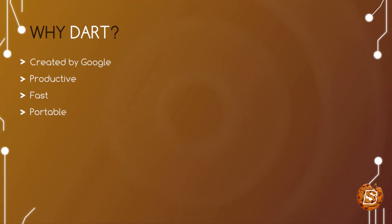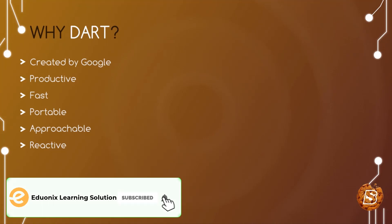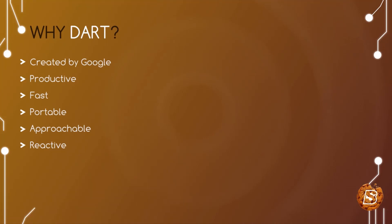Dart is also portable as it compiles to ARM and x86 code bases, and that's the reason why Dart mobile applications can run natively on Android, iOS, and beyond. For web applications, Dart transpiles to JavaScript. Transitioning to Dart is quite easy and it will take a couple of days to understand the syntax and basics of Dart programming if you are coming from a C, C++, C#, or Java background.